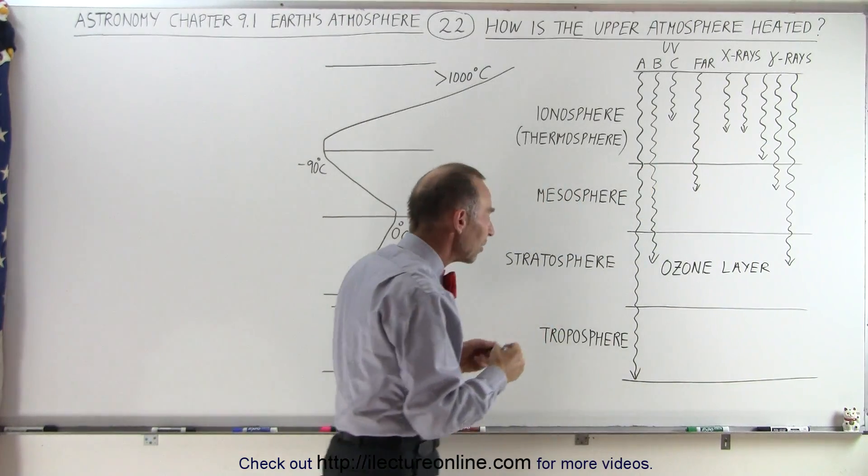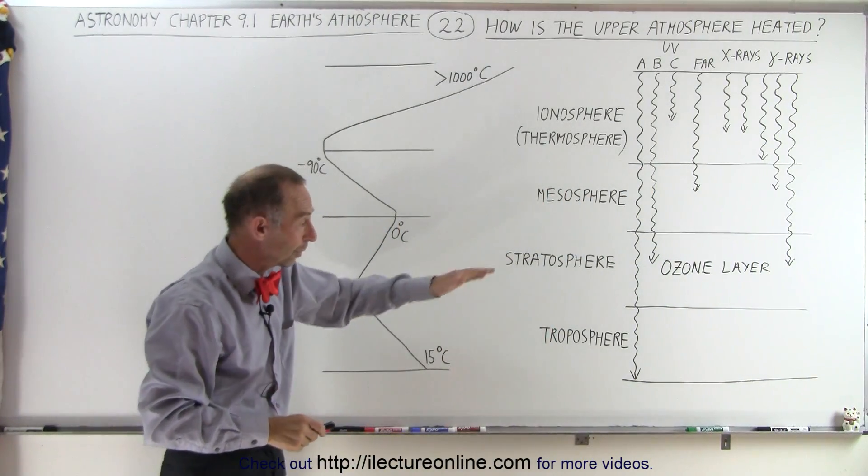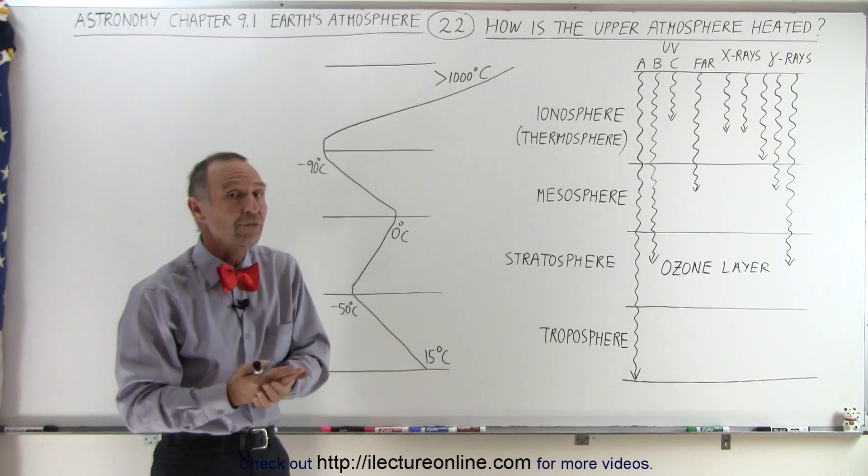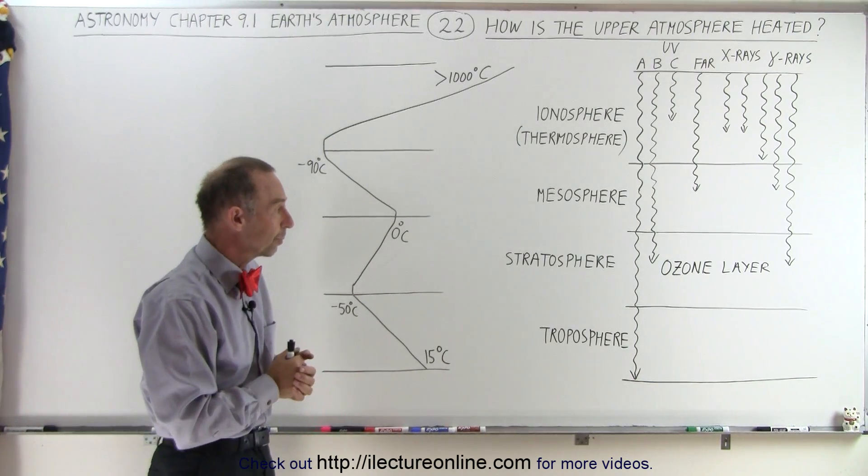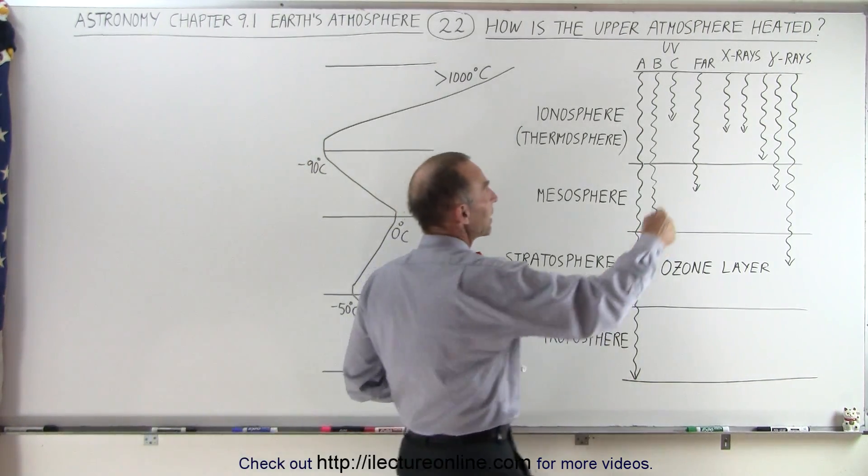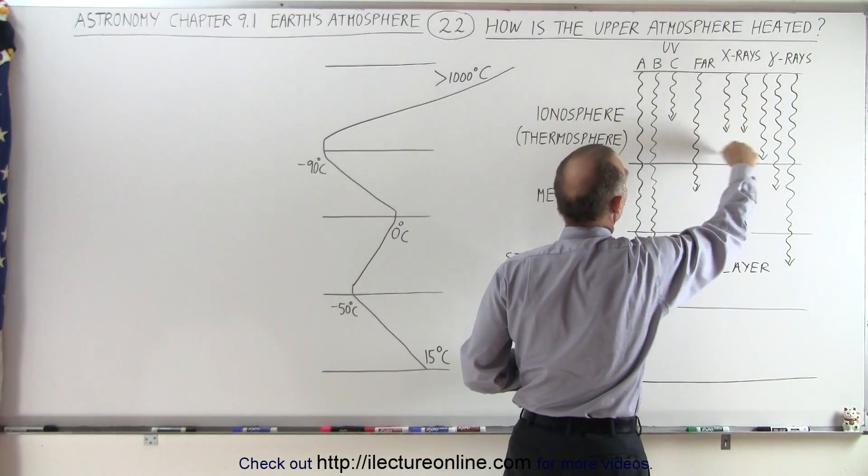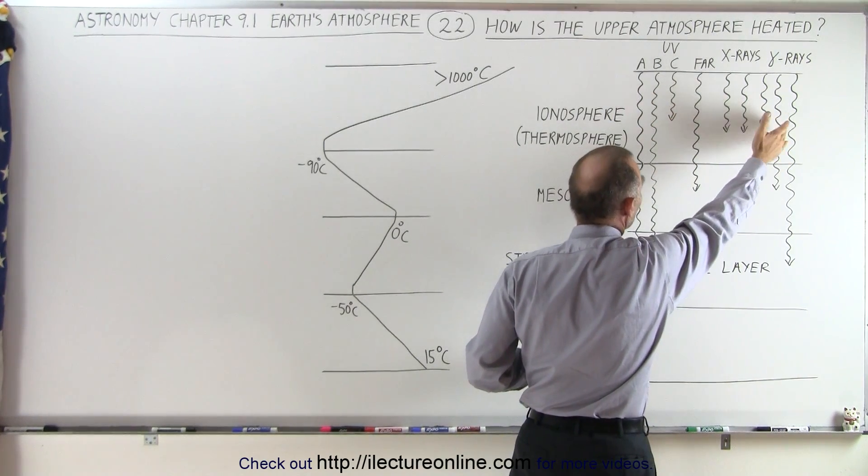And the UVA radiation does make it all the way through to the Earth's surface, and that's the UV radiation that will cause sunburns. So you can see here that the primary heating of the ionosphere is high energy UV, x-rays, and gamma rays. Gamma rays are relatively rare.